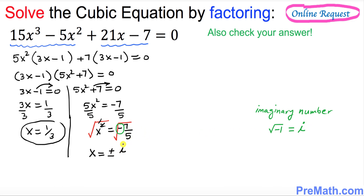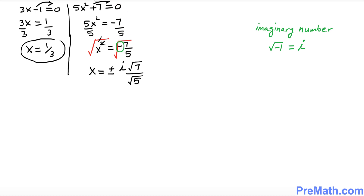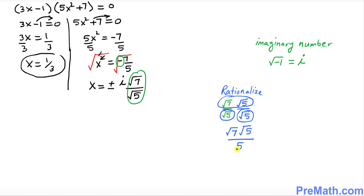We can put i outside and split it up as square root of 7 over square root of 5. Now at the denominator we have a radical, and we must not leave a radical in the denominator. So we rationalize this fraction by multiplying and dividing by square root of 5. On top that gives square root of 7 times square root of 5, and on the bottom those two are the same number multiplied together, giving simply 5 at the denominator.